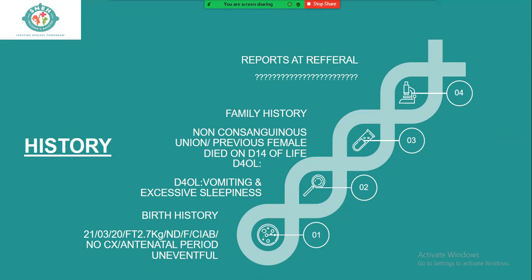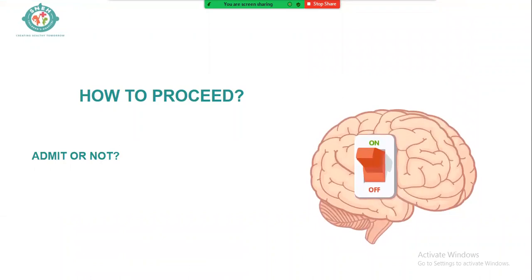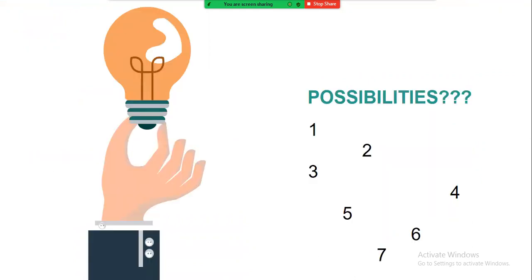First question: if a day-four-old newborn comes to you with vomiting, excessive sleepiness, and a family history where one child has already died, what would you do? Please pause the video and write in the comments below — would you admit or not, what investigations would you consider, and what possibilities come to your mind? It could be simple, like GI reflux, sepsis, or whatever comes to mind — just write it down.